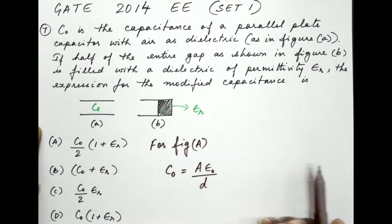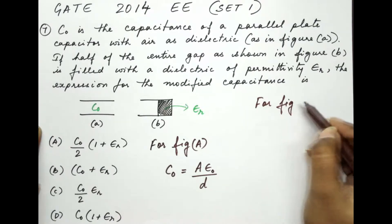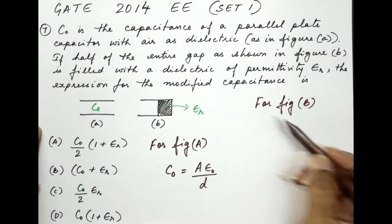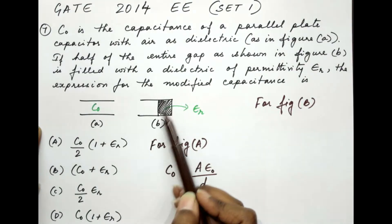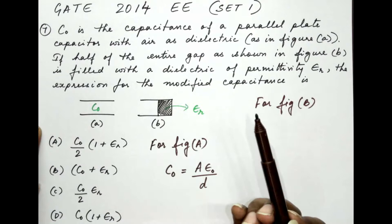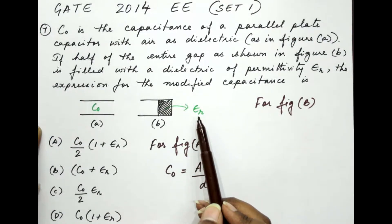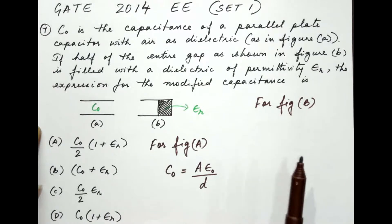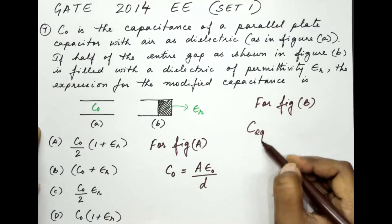Now let's consider the second figure. This is for figure B. For figure B, the question says that half of the gap is filled with a different dielectric and the dielectric has the permittivity of epsilon R. Now what would be the equivalent capacitance? So we have to find out what is C equivalent.